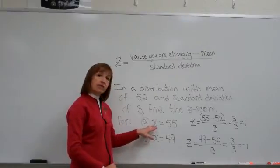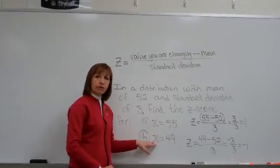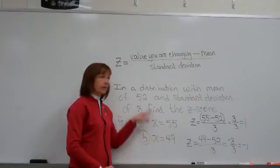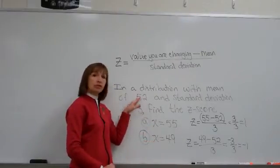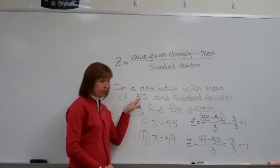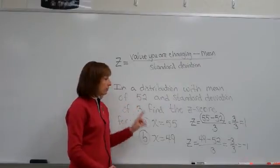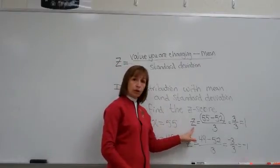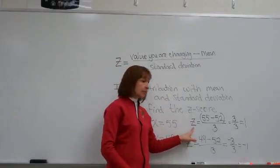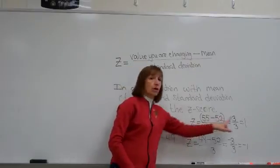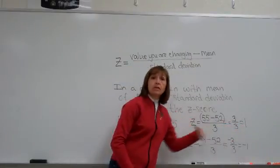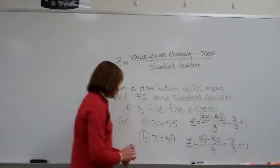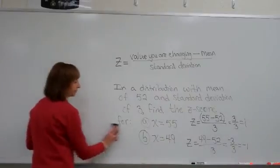The values from the specific distribution for a problem are called the raw scores, and the values you get when you change raw scores to z-scores are called standardized scores. The wording could be expressed in either manner.